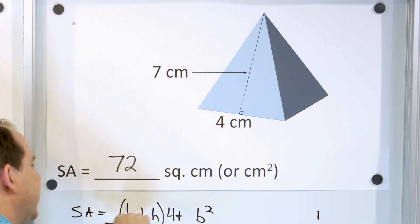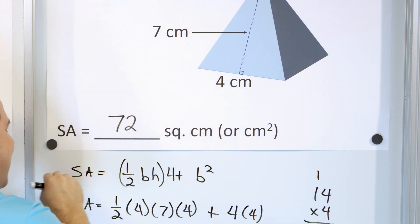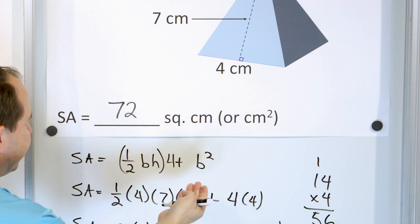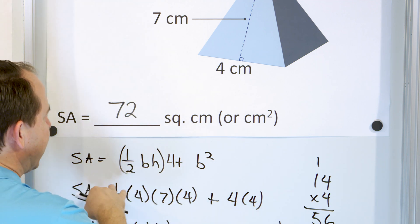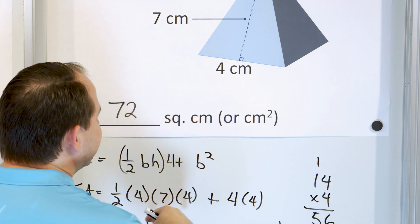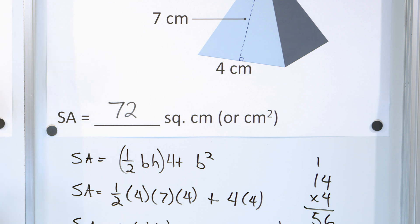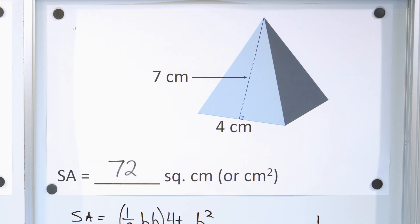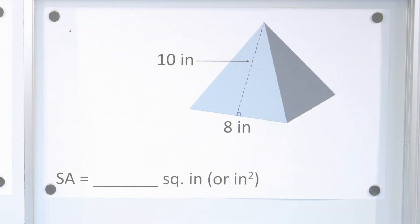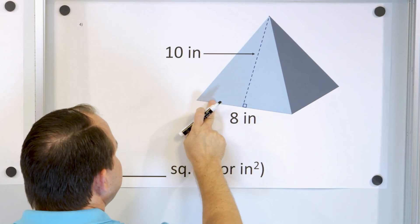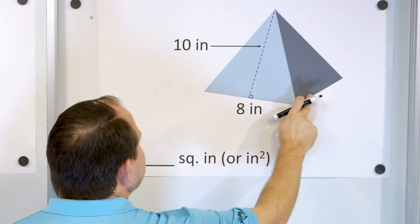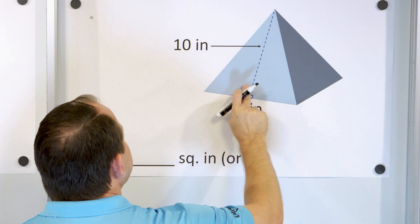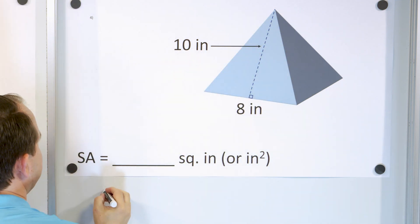I wrote the equation down out of habit, but I didn't actually really use it. I mostly just figured out the area of the sides and the base and wrote it all down. I have one more — let's solve one more and call it a day for this lesson. Here's our last problem.